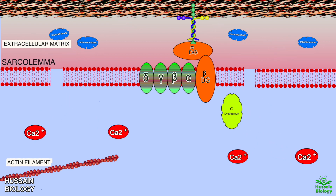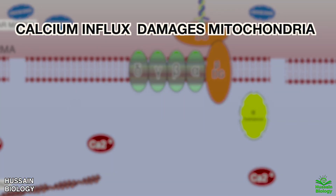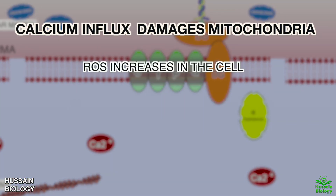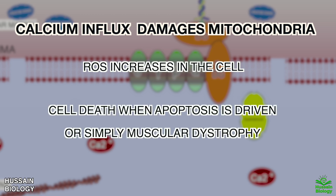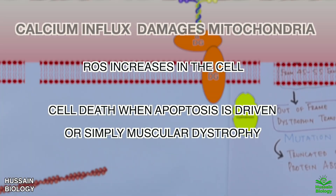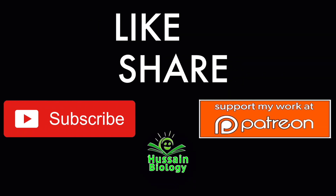The calcium influx leads to mitochondrial dysfunction, which in turn increases reactive oxygen species (ROS) in the cell. This damages the cell and eventually leads to cell death when apoptosis is driven. All these molecular events lead to Duchenne muscular dystrophy.